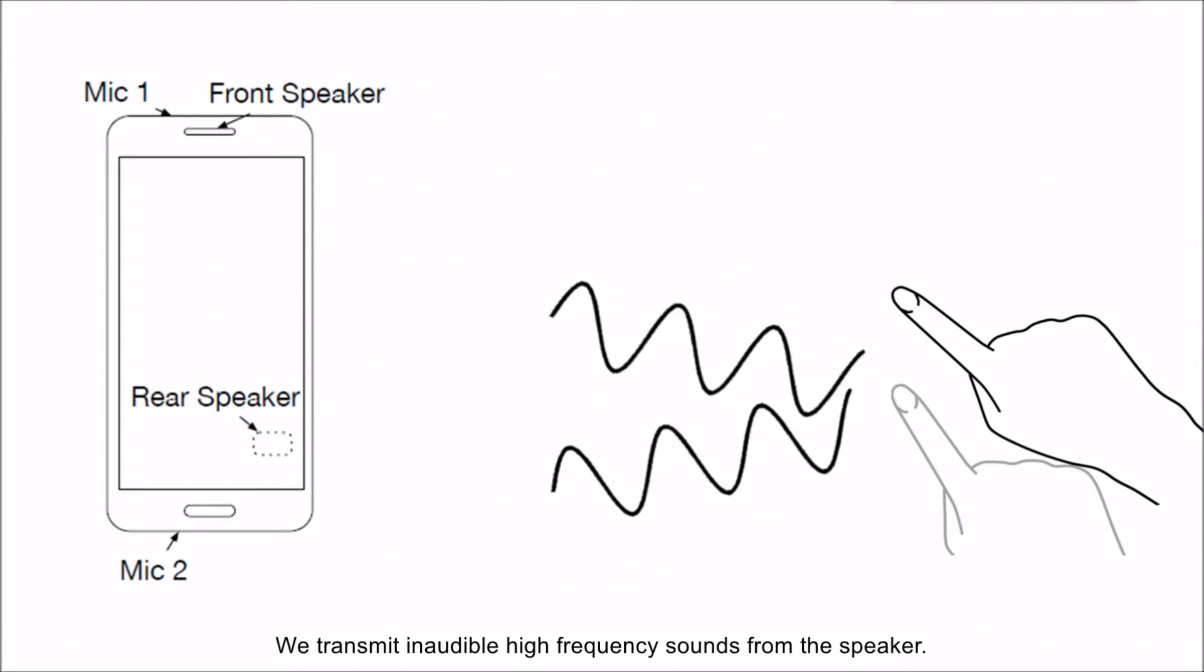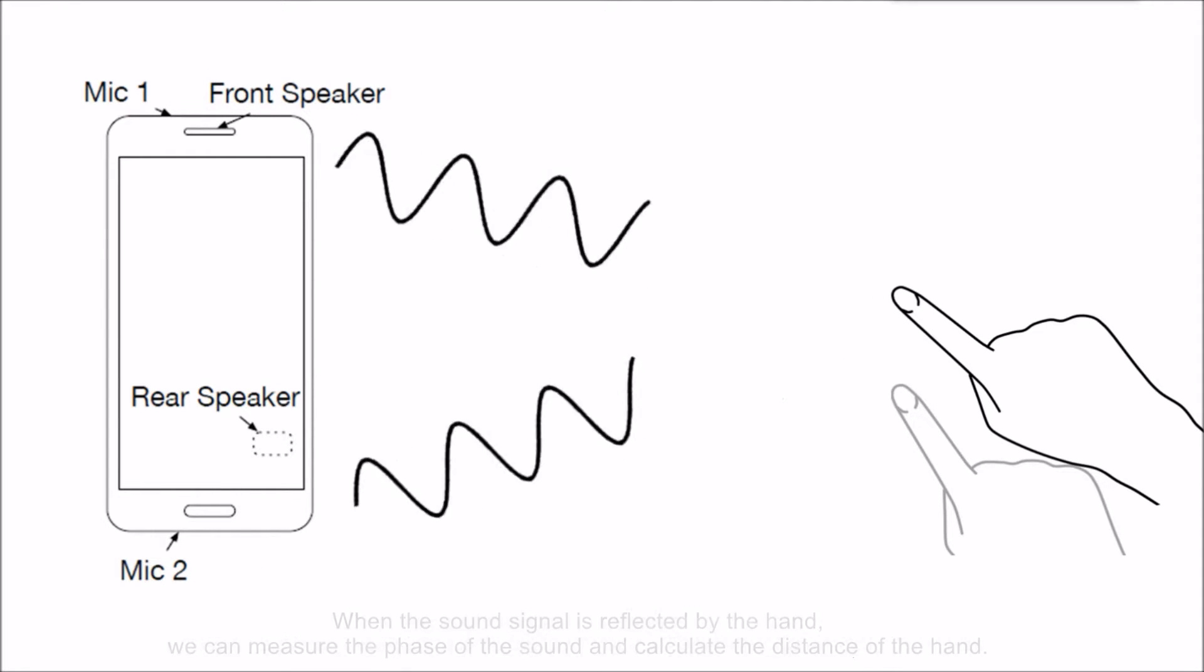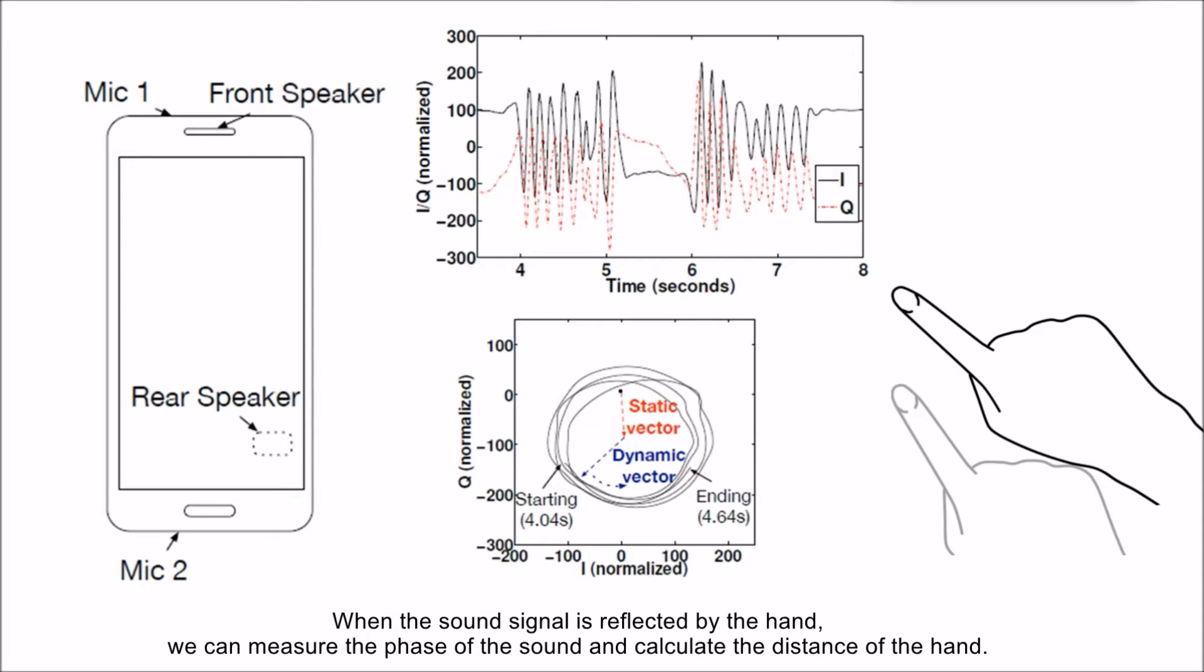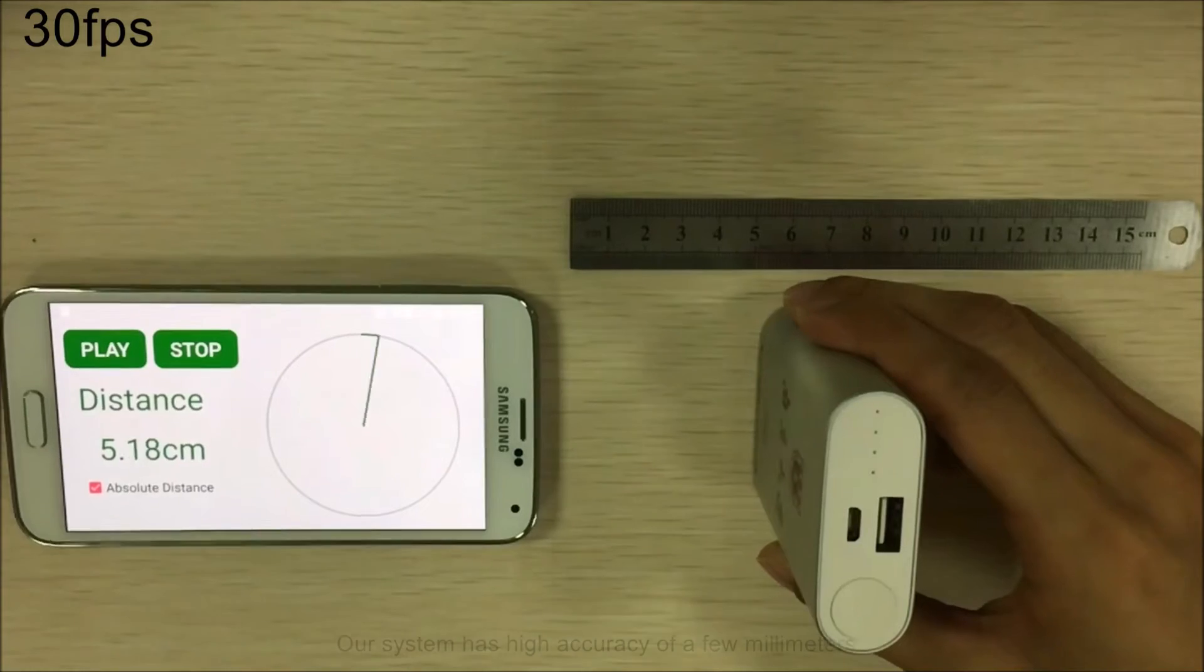We transmit inaudible high-frequency sounds from the speaker. When the sound signal is reflected by the hand, we can measure the phase of the sound and calculate the distance of the hand.